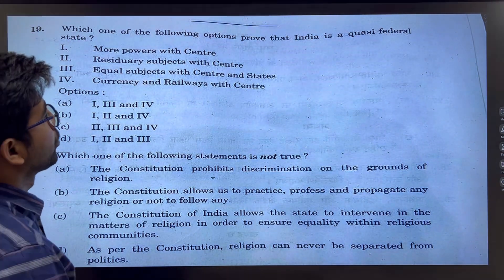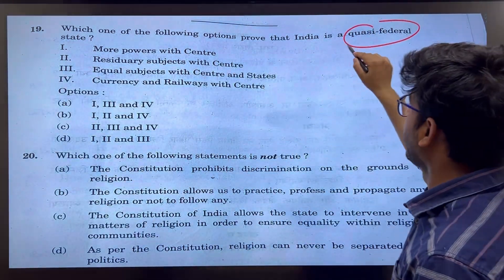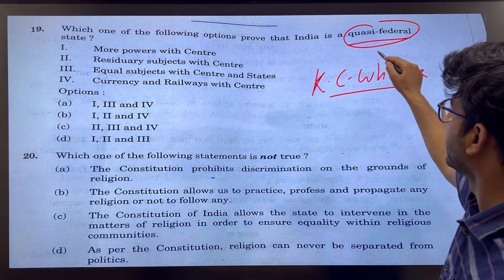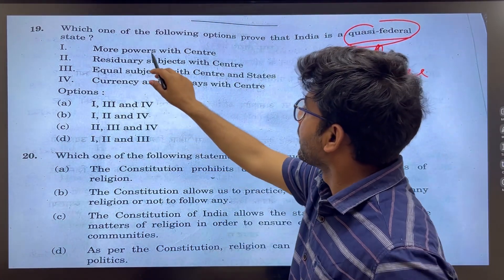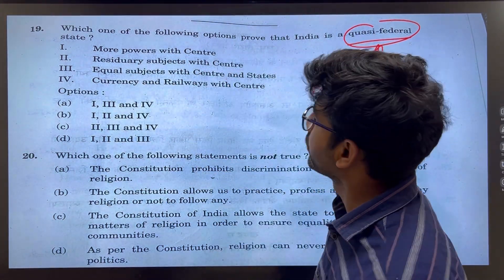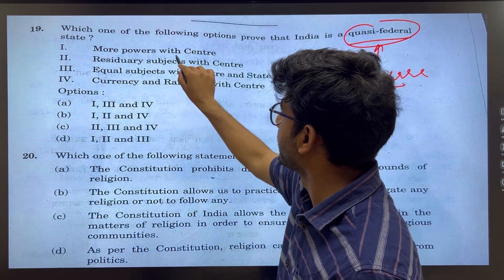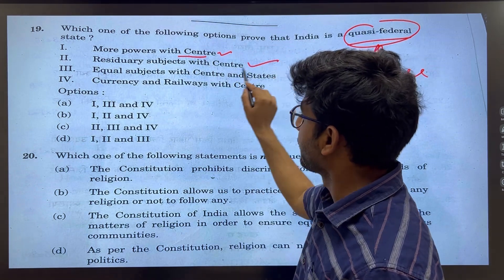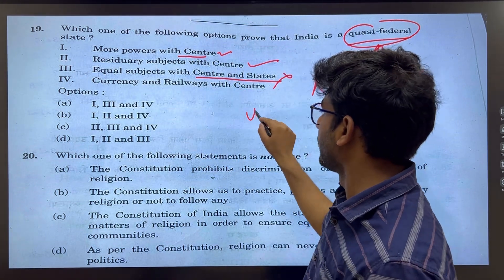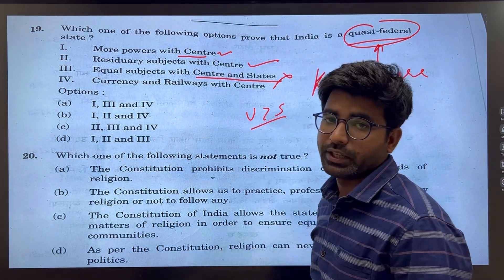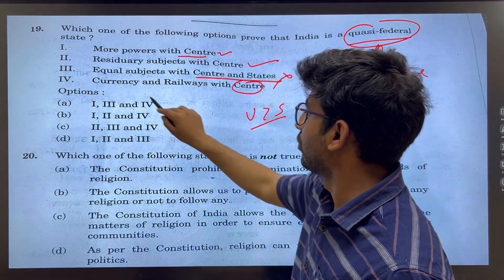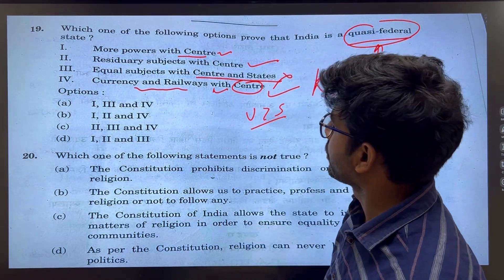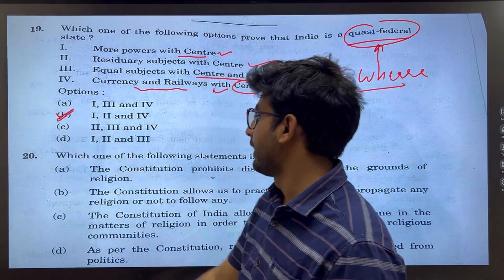Which one of the following options proves that India is a quasi-federal state? India gives more power to the center. Residual subjects are with the center — that is right. Equal subjects? No. The Union list is larger compared to the state list. Currency and railway are with the center as they are of national importance. So options 1, 2, and 4 would be the right answer.